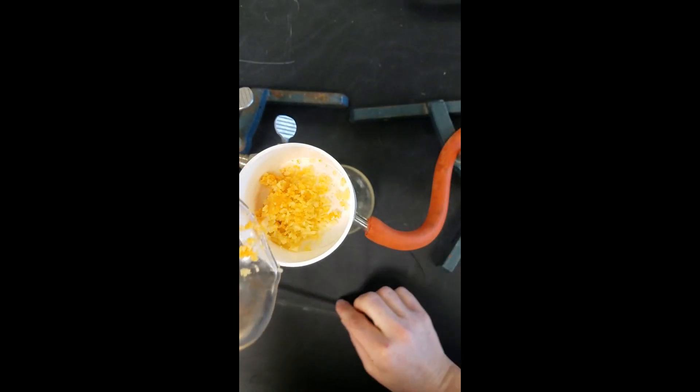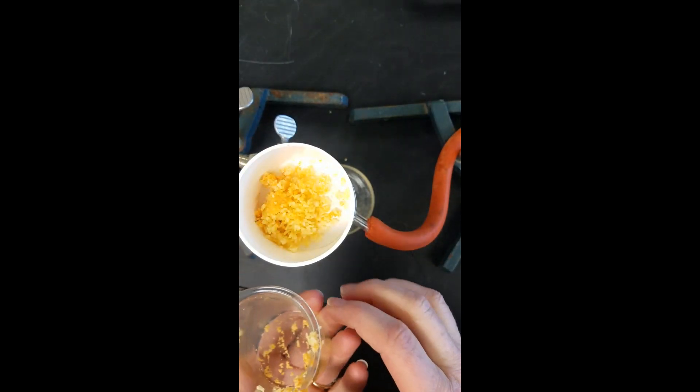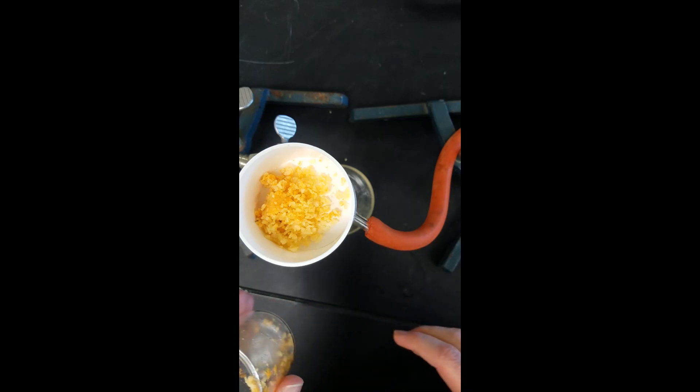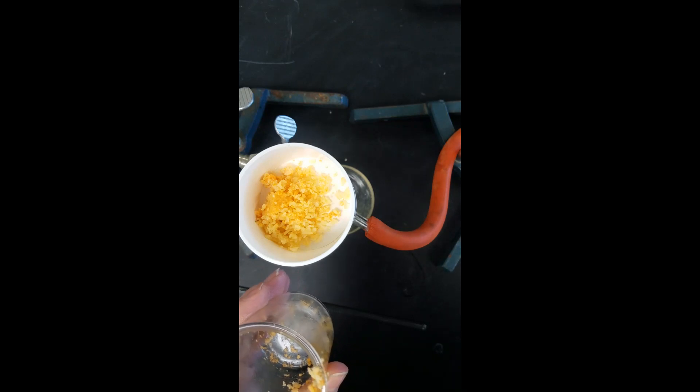And we are going to repeat this particular step two more times. So we are going to dump these chips back into the beaker and then add more petroleum ether, mix it for a minute, and pull it through the vacuum again.